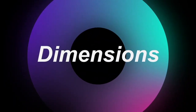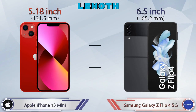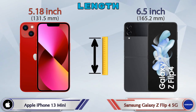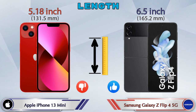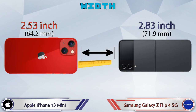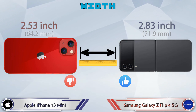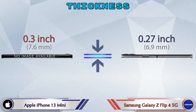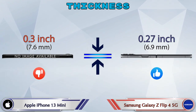Now let's check the dimensions. Length: iPhone 13 Mini is 5.18 inches and the Z Flip 4 5G is 6.5 inches. Width: iPhone 13 Mini is 2.53 inches and the Z Flip 4 5G is 2.83 inches. For thickness, the iPhone 13 Mini is 0.3 inches and the Z Flip 4 5G is 0.27 inches.